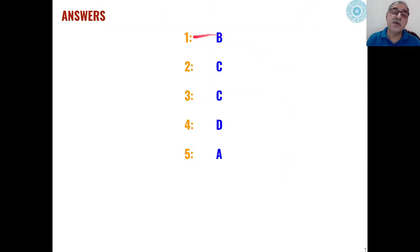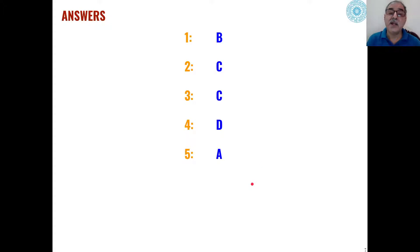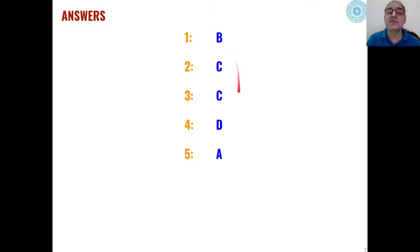As far as the answers to these five problems are concerned: the first question answer is B, second is C, third is C, fourth is D, and fifth is A. Now we will see one by one how each choice comes about and what is the mechanism of formation of these products.